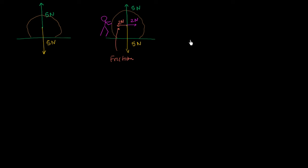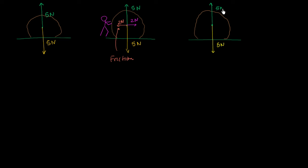Now let's do another scenario. I have a rock with a 5 Newtons force of gravity downwards, and the normal force — the rock being supported by the ground — 5 Newtons upwards. This guy has been able to push a little bit harder; he really put his back into it and is now pushing with a force of 3 Newtons to the right. But the force of friction is still 2 Newtons to the left.